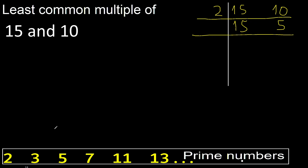Cannot be divided by 2. Can be divided by 3. Yes. 15 divided by 3 is 5. 5 cannot be divided by 3, therefore equal.